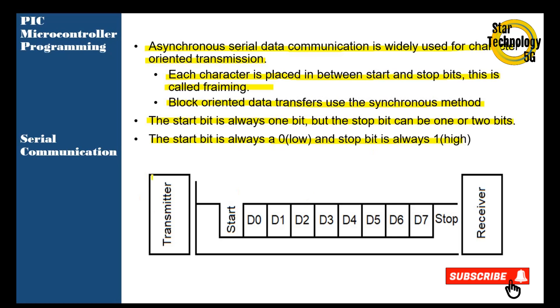You can see here is the transmission. Here is the start bit — it is always low. Here is the data we need to transfer, and here is the stop bit, which is always high.